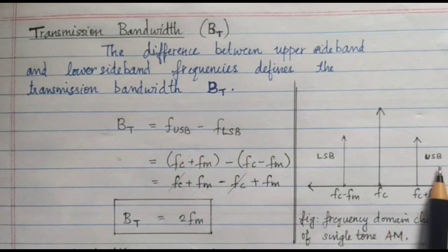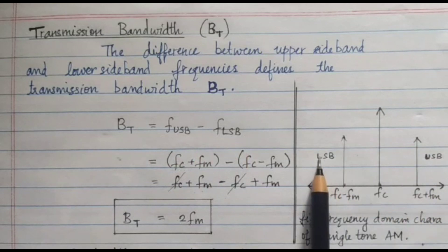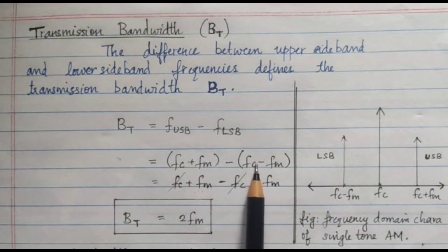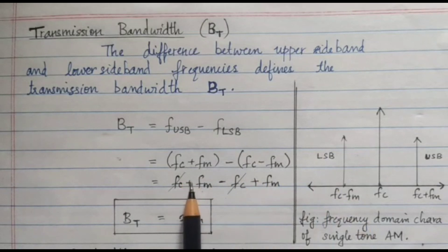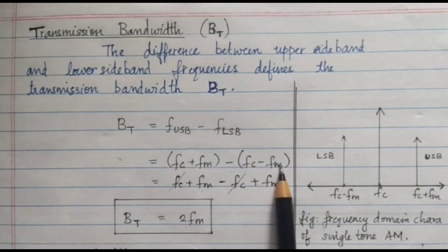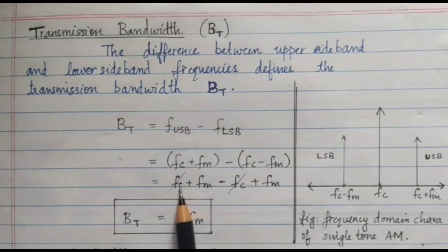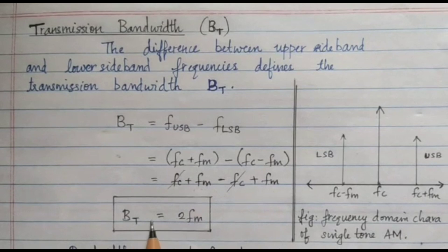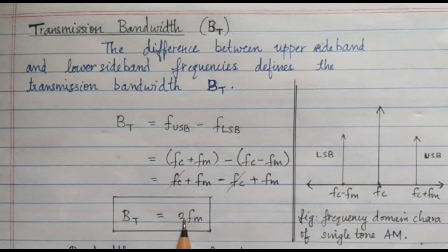Substituting, FUSB = FC + FM and FLSB = FC − FM. So BT = (FC + FM) − (FC − FM). Expanding: FC + FM − FC + FM. The FC terms cancel, leaving BT = 2FM. From this we can say the bandwidth required for transmission of an AM wave is twice the modulating frequency, that is 2FM — two times the frequency of the message signal.